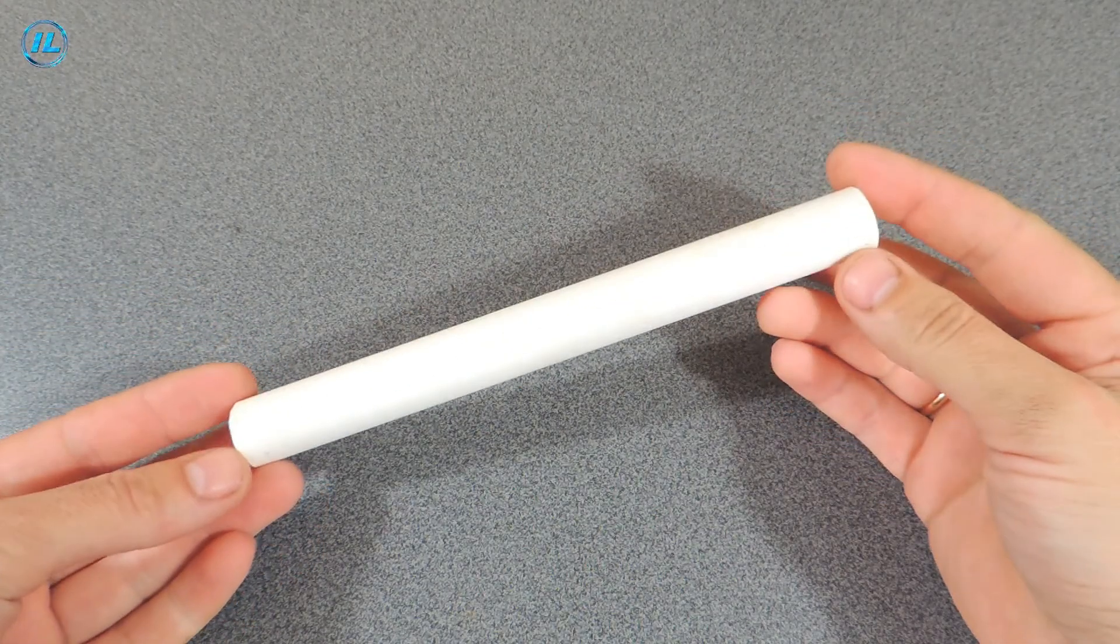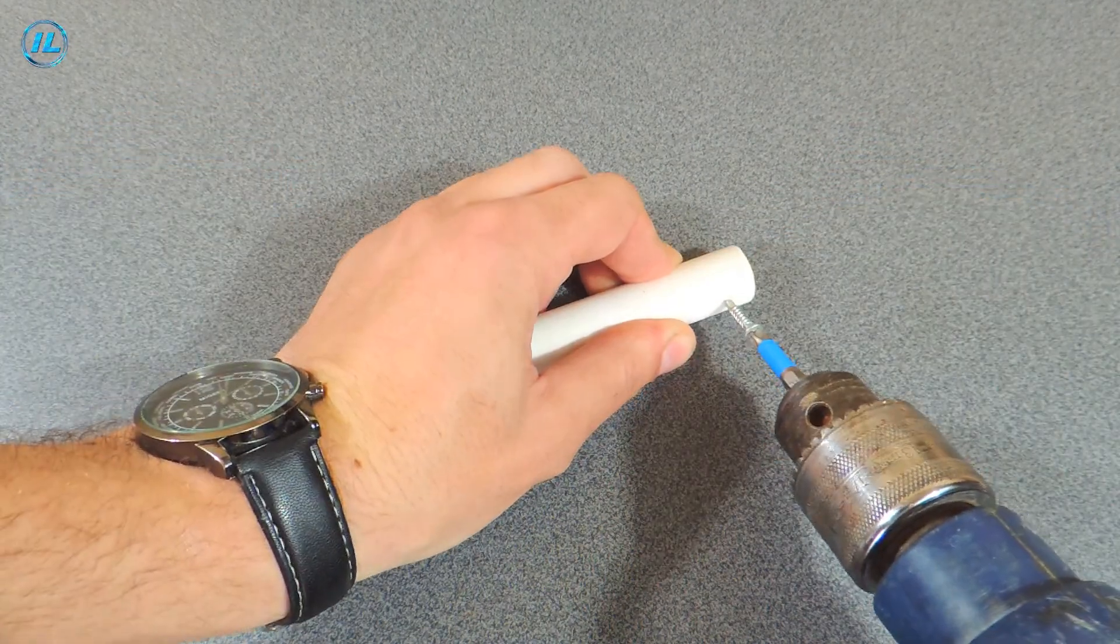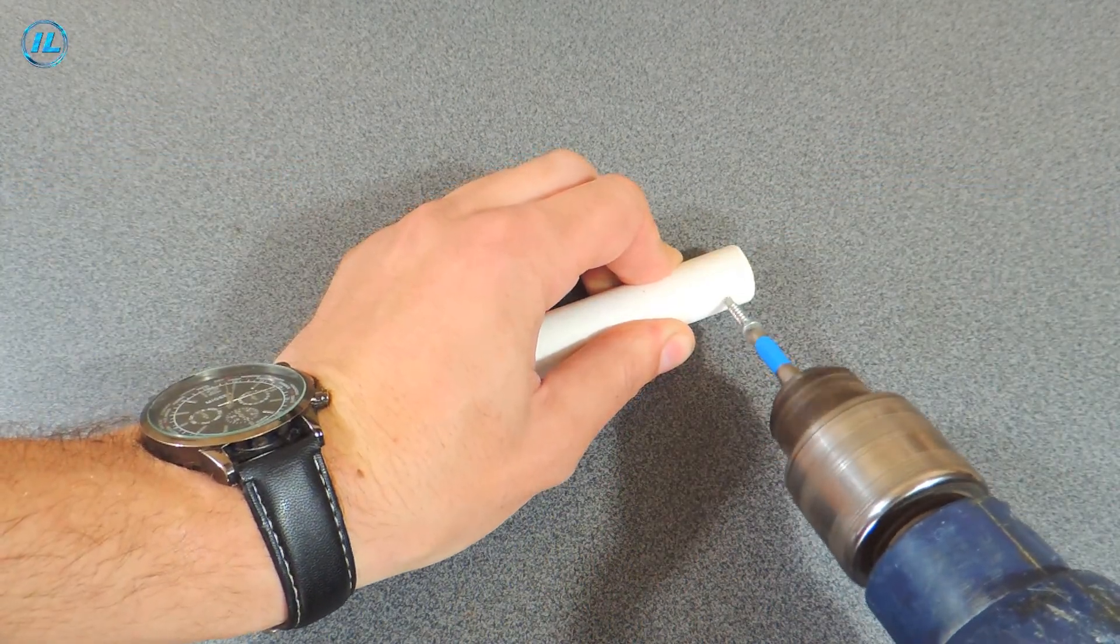First of all, I will make the base or handle of an infrared soldering iron. For these purposes, a small piece of PVC tube will be suitable.